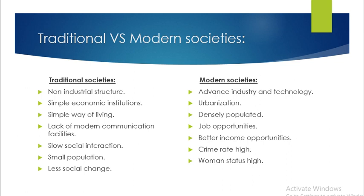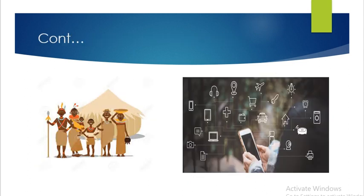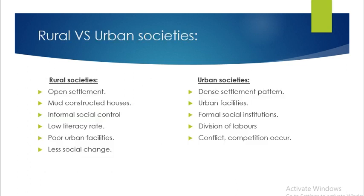Modern society features advanced industry and technology, urbanization with dense populated areas, better job and income opportunities, high literacy rate, and women's status is high — meaning that in modern society women and men are equal. The modern society enables online work and better opportunities through digital means.